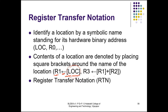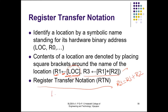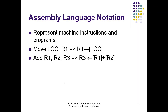Another example: R3 ← [R1] + [R2] adds the contents of registers R1 and R2 and places the sum into R3. This is equivalent to saying R3 = R1 + R2, and R1 = [LOC] means the content of LOC. The RTN notation is an easy and generic way of illustrating an operation, but it cannot be used to represent machine instructions directly.